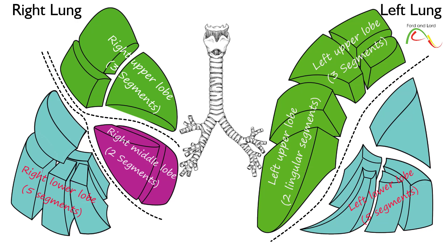Each lung can have a maximum of 10 segments. Frequently, some segments are fused in some people. For example, the left lung can often have as few as eight or nine segments.